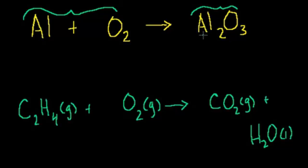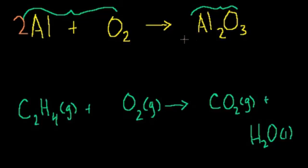I need the same number of aluminum on both sides of the equation, and the same number of oxygens on both sides. I have one aluminum here, and I have two aluminums there, so a simple thing is to just put a 2 out here. Now I have two aluminums on this side and two aluminums on this side — the aluminums look happy.